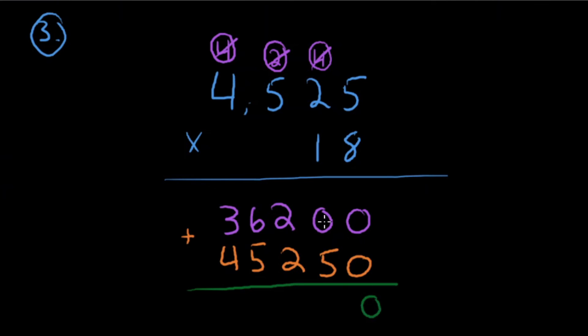Add the columns carefully. Ones: 0. Tens: 5. Hundreds: 4. Thousands: 11 — regroup. Ten-thousands: 7. The answer is 81,450. Check your work against mine and see where you may have made a mistake. Thanks for tuning in — more videos coming soon. Click subscribe so you're notified when a new video drops. Mr. C out!